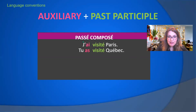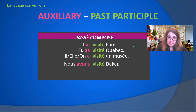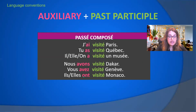Tu as visité Paris — you visited Paris. Il/elle/on a visité un musée — he/she/it visited a museum. Nous avons visité Paris — we visited Dakar. Vous avez visité Genève — you visited Geneva. Et ils et elles ont visité Monaco. Now we conjugate the verb visiter in the passé composé with the auxiliaire avoir and the past participle visité.